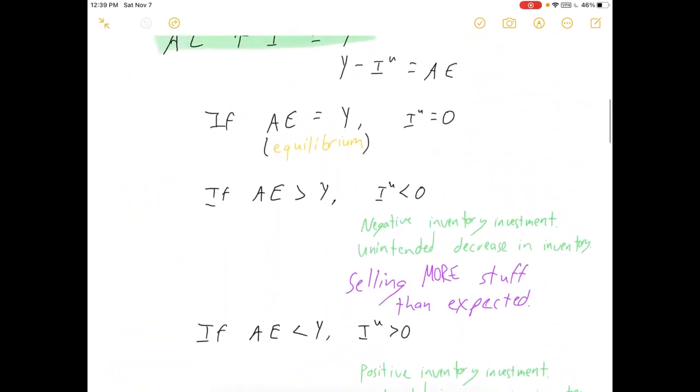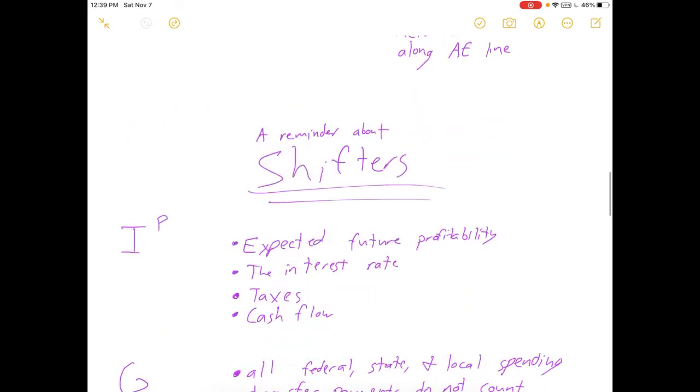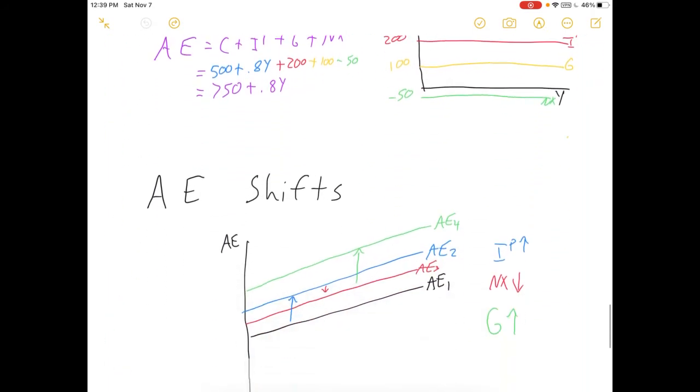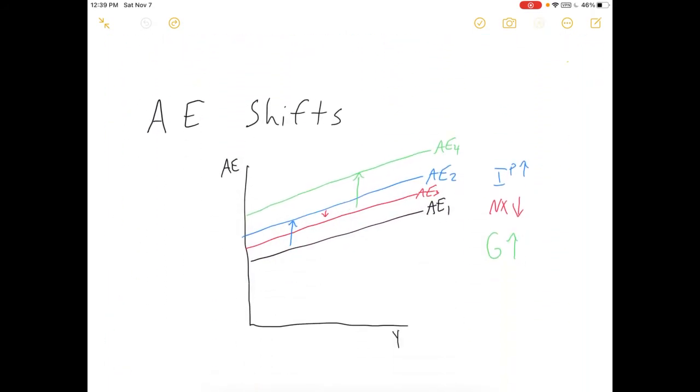But yeah, I think that is a sufficient crash course for this aggregate expenditures curve. I hope it's helpful to you. In my next video, we will draw the full Keynesian cross diagram where we put a 45 degree line in it and do some crazy stuff with equilibrium and unplanned inventory investment and the business cycle. But we'll get to that later. So, thanks for watching, guys. Good luck and happy econ-ing.